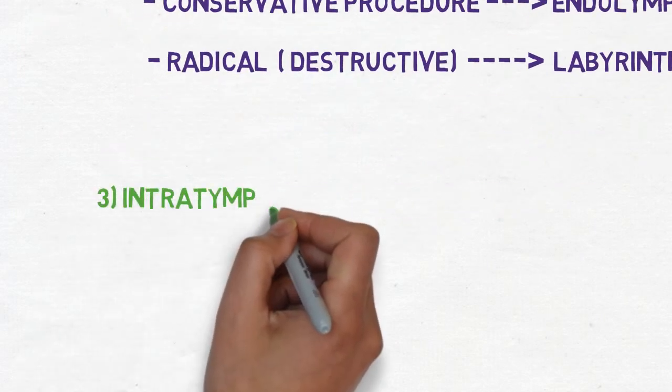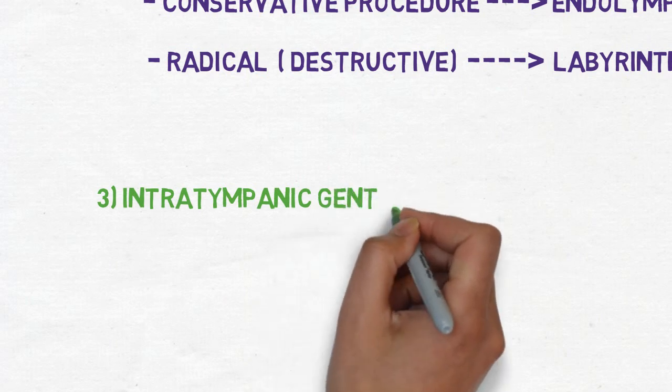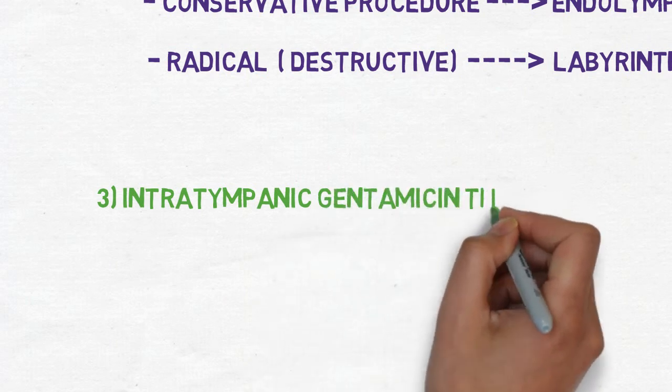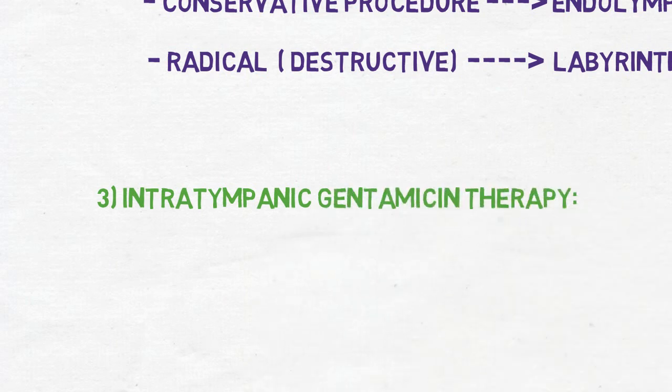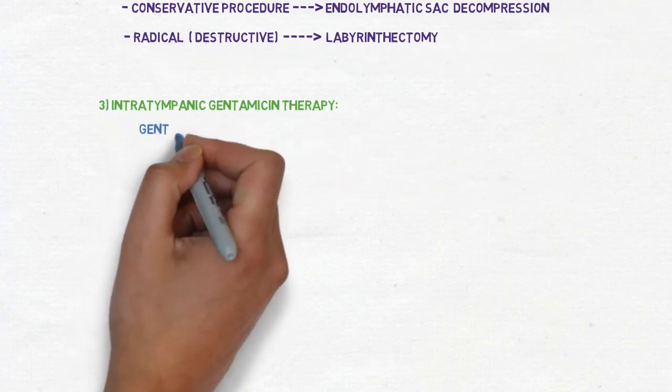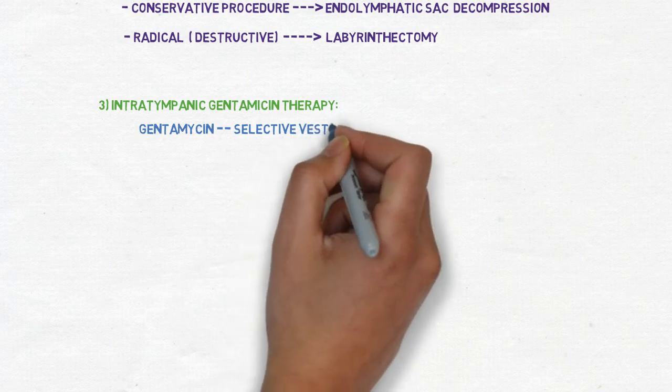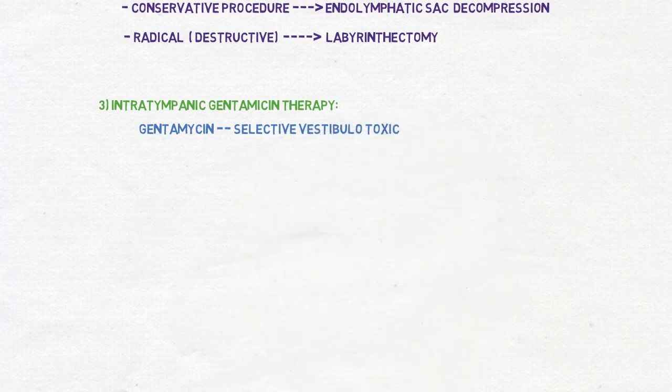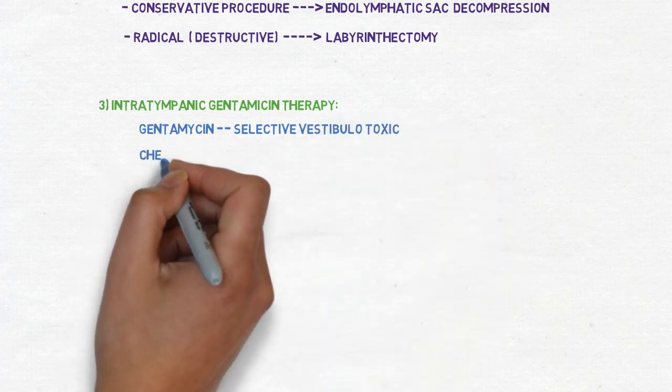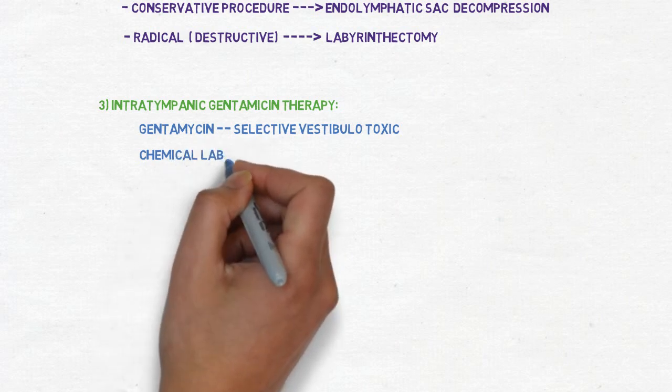The other method is intratympanic gentamicin therapy. So what occurs in this? Gentamicin is selective vestibulotoxic. So in this treatment it kills the labyrinth without damaging the cochlea. Then there is no vertigo.